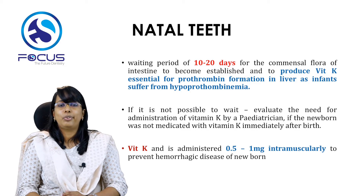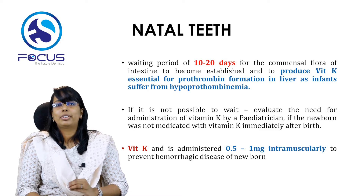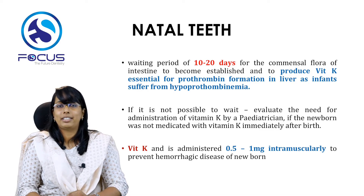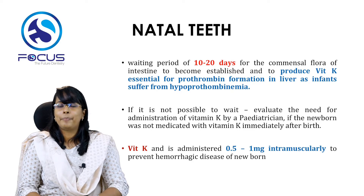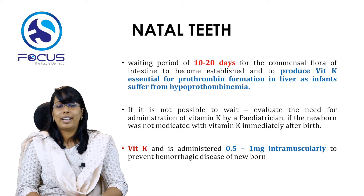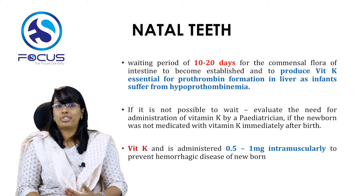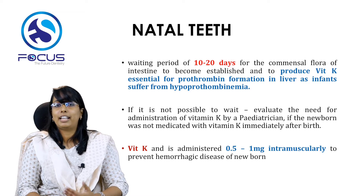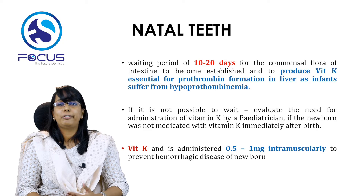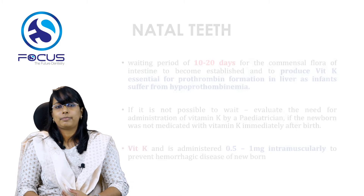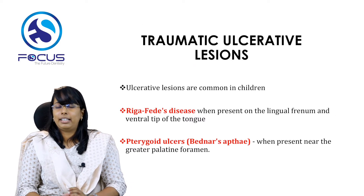Before extracting a natal tooth, it is advised to wait 10 to 20 days to allow the commensal flora of the intestine to establish and produce vitamin K, which is essential for prothrombin formation in the liver, as infants may suffer from hypoprothrombinemia. If aspiration risk is high and waiting is not possible, the need for vitamin K administration should be evaluated with a pediatrician. If the newborn was not medicated with vitamin K at birth, it should be administered 0.5 to 1 mg intramuscularly to prevent hemorrhagic disease of the newborn.